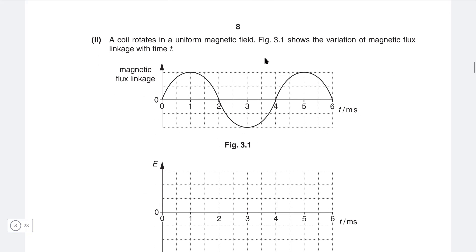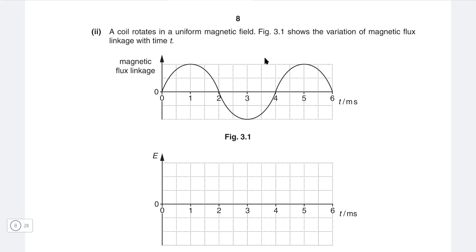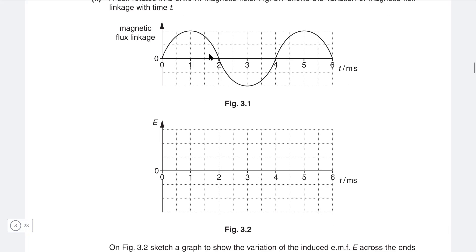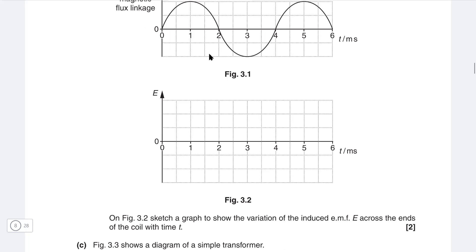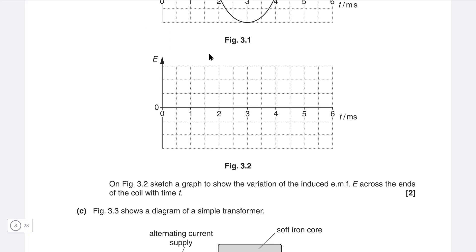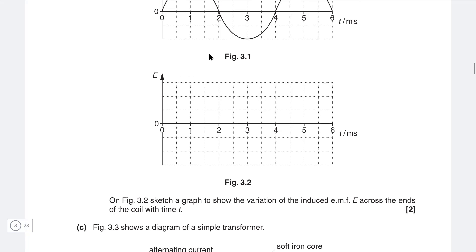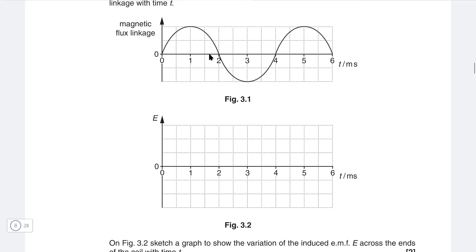Part 2. A coil rotates in a uniform magnetic field. Figure 3.1 shows variation of the magnetic flux linkage with time t. We need to sketch a graph to show the variation of the induced EMF across the ends of the coil with time t. What is the link between magnetic flux linkage and EMF? The EMF is equal to the negative rate of magnetic flux linkage, so this will be the negative gradient of this graph.